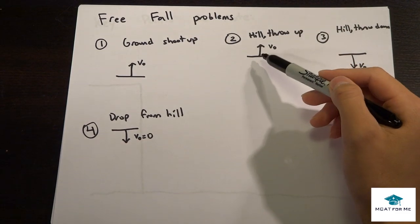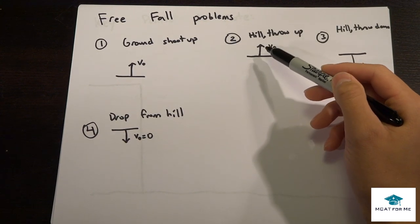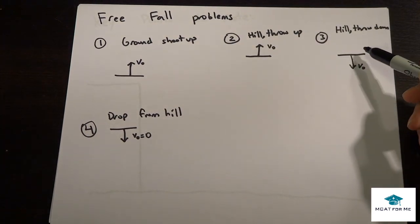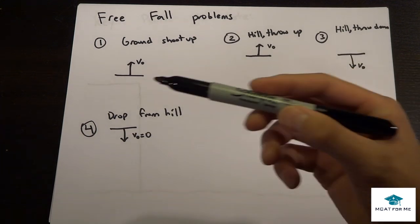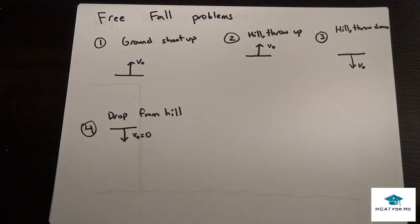The second type could be we're on a hill and we throw it up at initial velocity. Third one, it's on a hill and we throw it down. The fourth and final one is we drop it from a hill, which means the initial speed is zero.